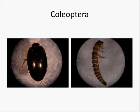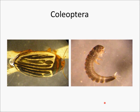Here are examples of adult and larval aquatic beetles. This is a Dytiscidae — a very smooth, streamlined body form. Here is an Elmidae with a heavily armored body form. Here's another Elmidae, again with a heavily armored body, and another Dytiscidae.